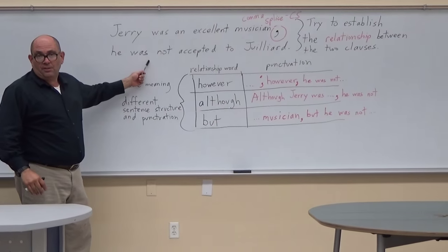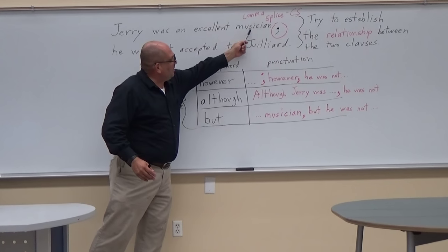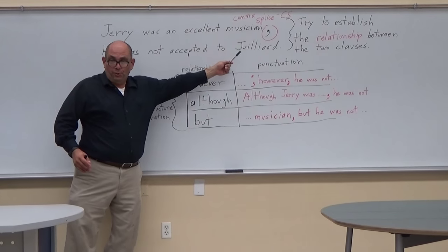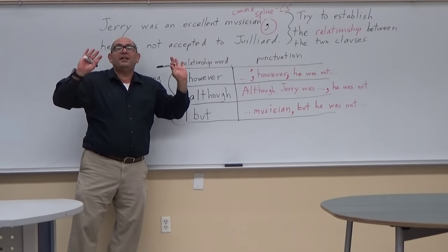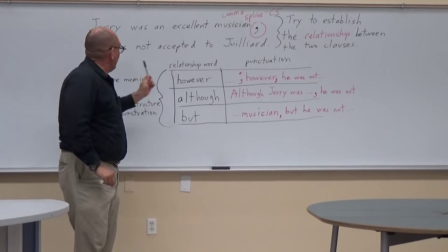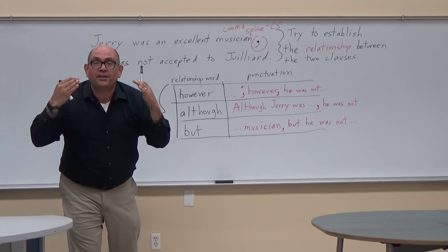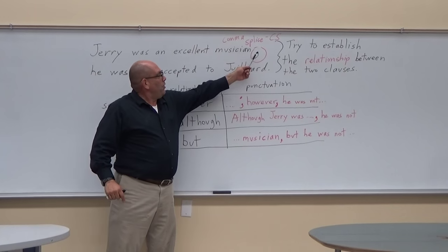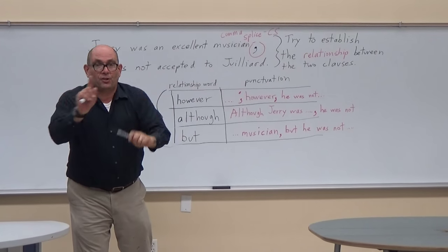Take a look at these two clauses, two sentences: 'Jerry was an excellent musician, he was not accepted to Juilliard.' Now, 'Jerry was an excellent musician' is independent — it can stand alone, it doesn't need anything else, you can put a period there. 'He was not accepted to Juilliard' is also an independent clause. But the writer joined these two clauses with a comma. That's called a comma splice.